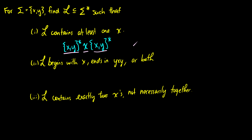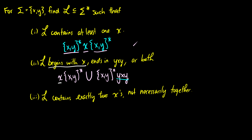For language two, it begins with an x, ends in yxy, or does both, so we may need to take a union. The first part begins with x, so we have an x at the start and then it can do anything with any pairs of x and y. We take the union of all strings that end in yxy — the first bit can be anything, and then it has to end in yxy. So the first set covers strings beginning with x, and the second covers strings ending in yxy.